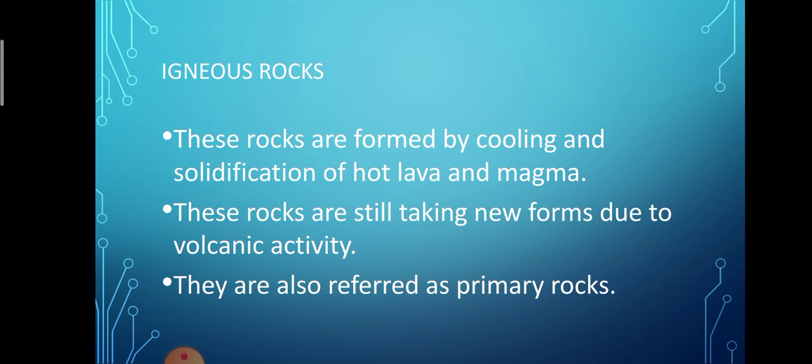On the basis of origin, igneous rocks may be classified under two categories: extrusive or volcanic rocks, and intrusive or plutonic rocks. Lava is the molten material which reaches the earth's surface through volcanic vents, forming extrusive or volcanic rocks by cooling and solidifying. When lava gets exposed to air, it cools rapidly and fine-grained crystalline rocks are formed. For example, basalt, pumice, etc.